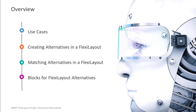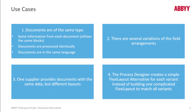We'll also talk about mapping blocks in FlexiLayout alternatives, and there's certainly a best practice there. You can use FlexiLayout alternatives when documents coming in are of the same type, they have the same information, the documents are processed identically and in the same language, and there are several variations of field arrangements. One supplier, or even more than one supplier, could provide documents with the same data but different layouts. The process designer creates a simple FlexiLayout alternative for each variant, instead of building one complicated FlexiLayout to match all variants.